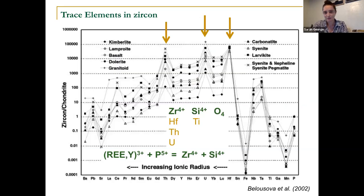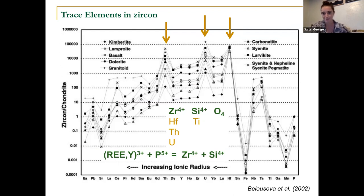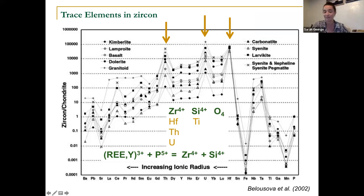Here's another figure from Elena Velosova, from her classic 2002 paper, where she did something quite similar with zircon trace and rare earth elements. She analyzed zircon trace and rare earth elements from a variety of different rock types and started to characterize key fingerprints for what different concentrations might look like in different zircon types. As we suggested before, they always have relatively high thorium, high uranium, and high hafnium in their structure. These are normalized to chondrite, and you can see some of the other things that incorporate typically in the 0.1 to 1,000 ppm range.